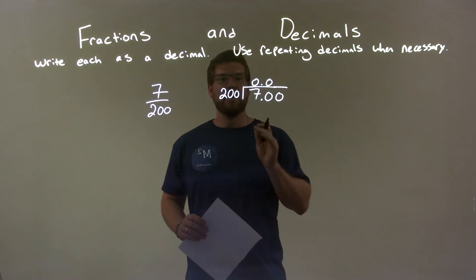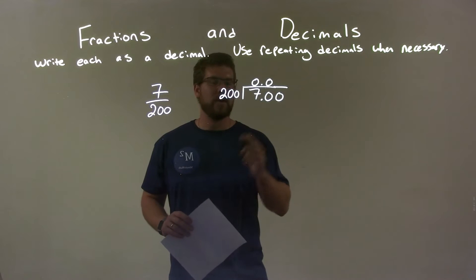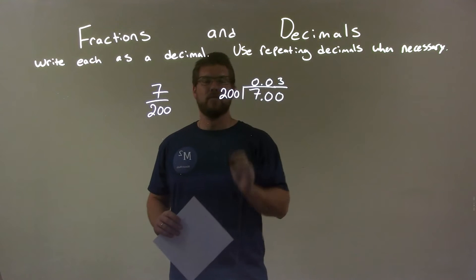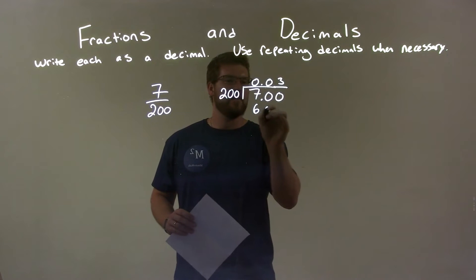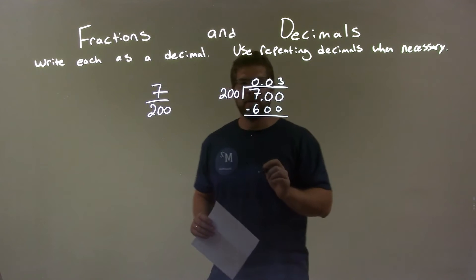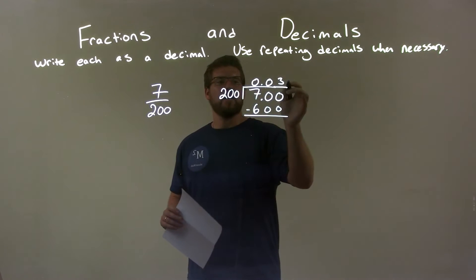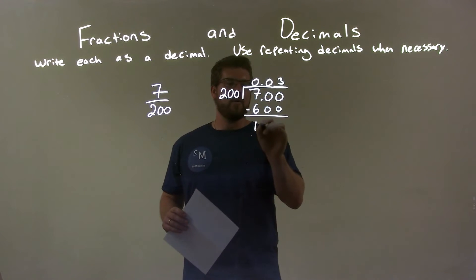Yes, it does. It can go in three times. Three times 200 is 600. So 600 here, and we subtract it. 700 minus 600 is 100. We have 100 now.